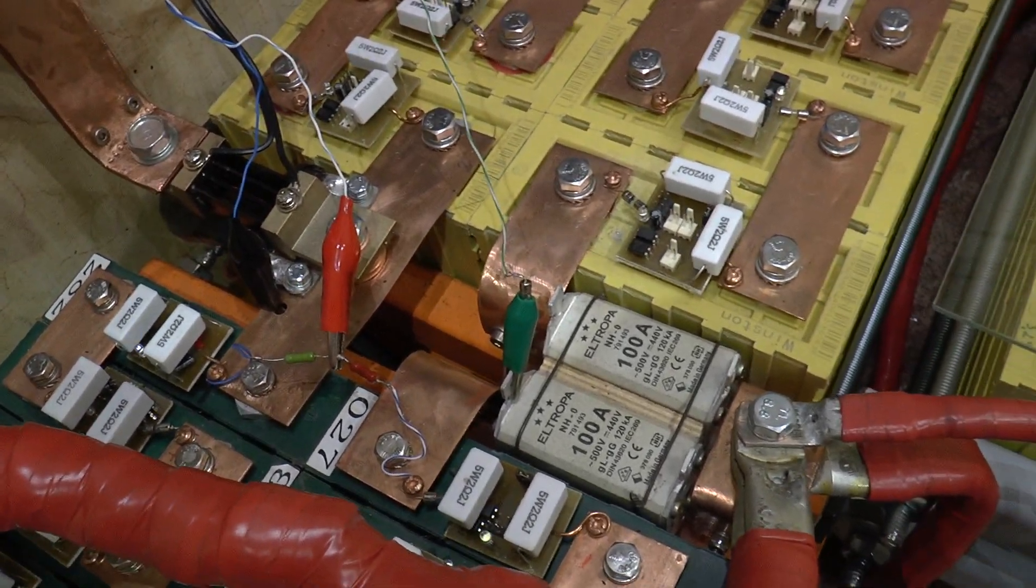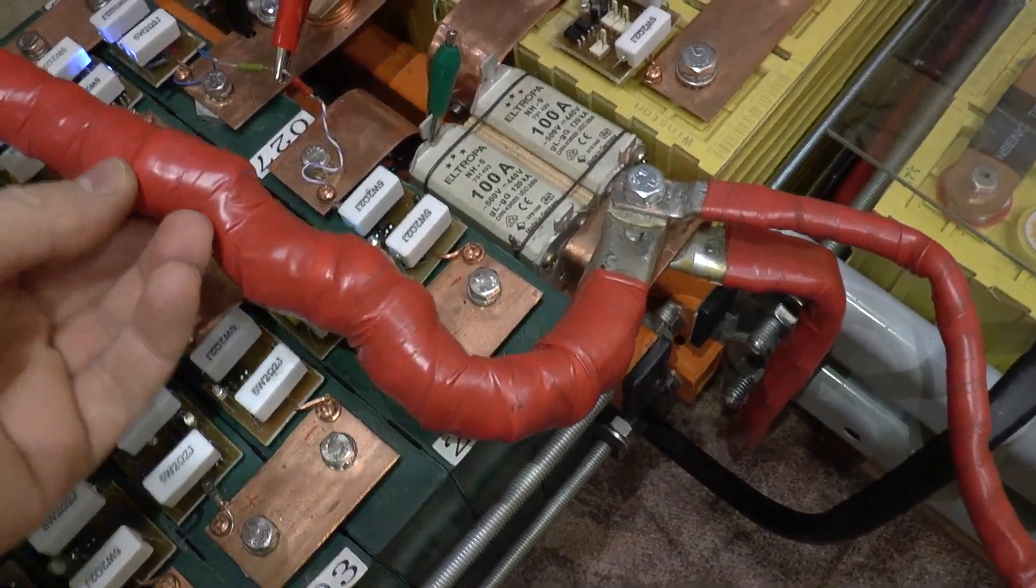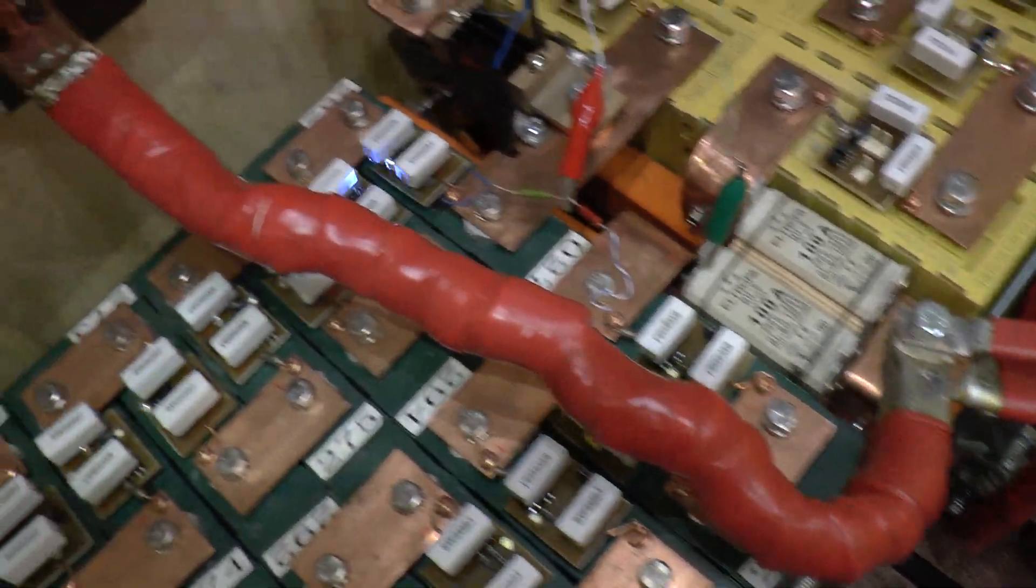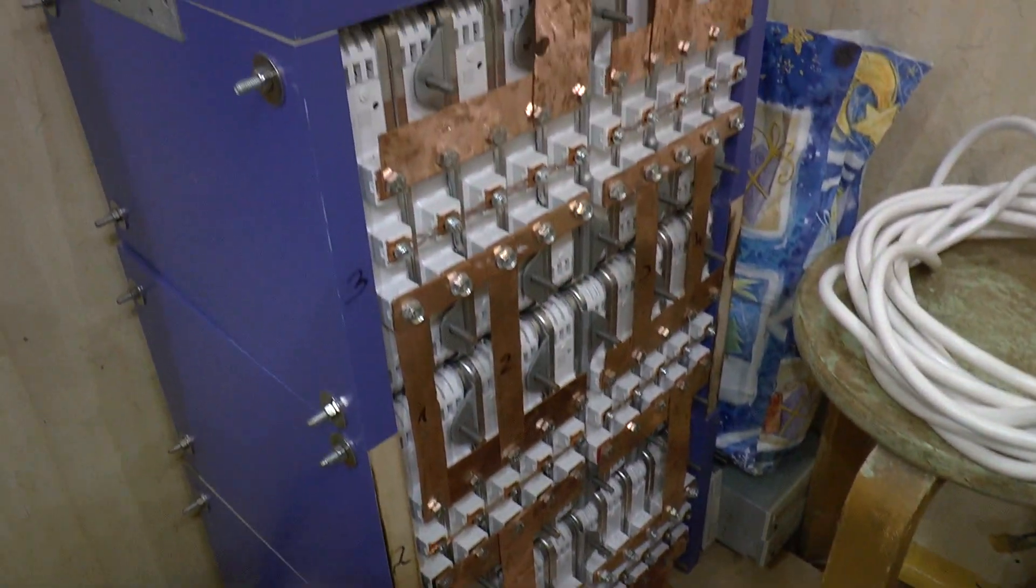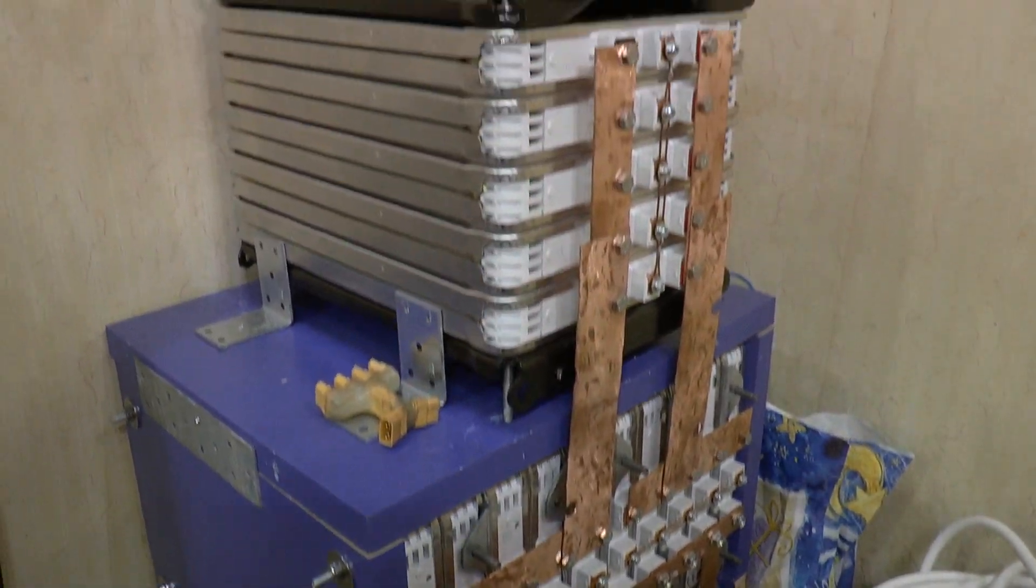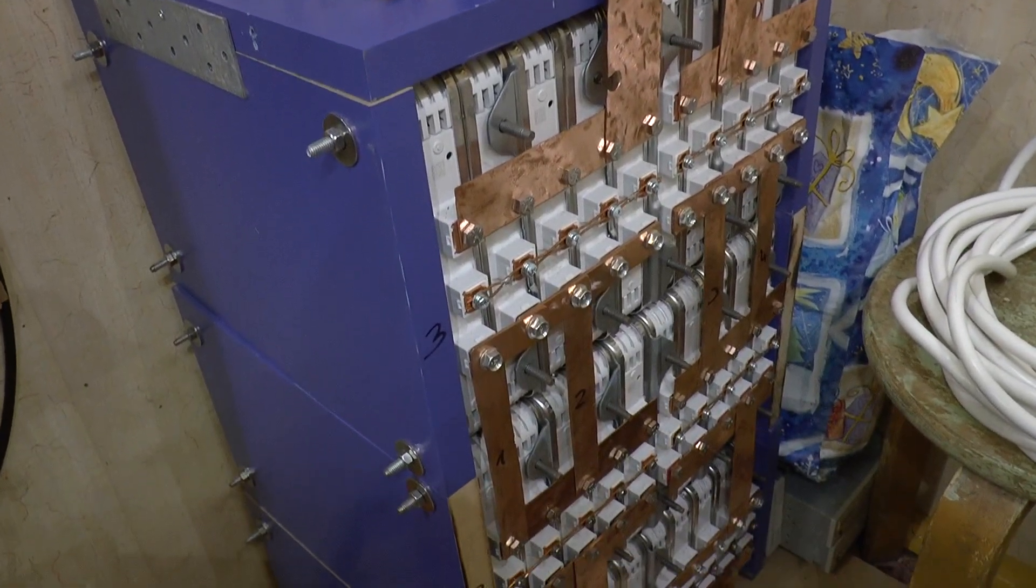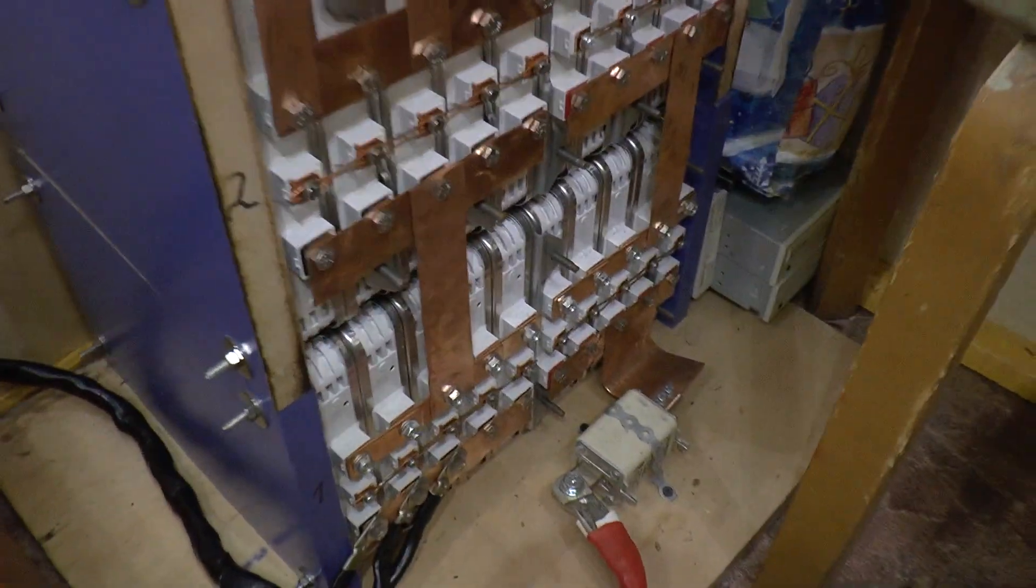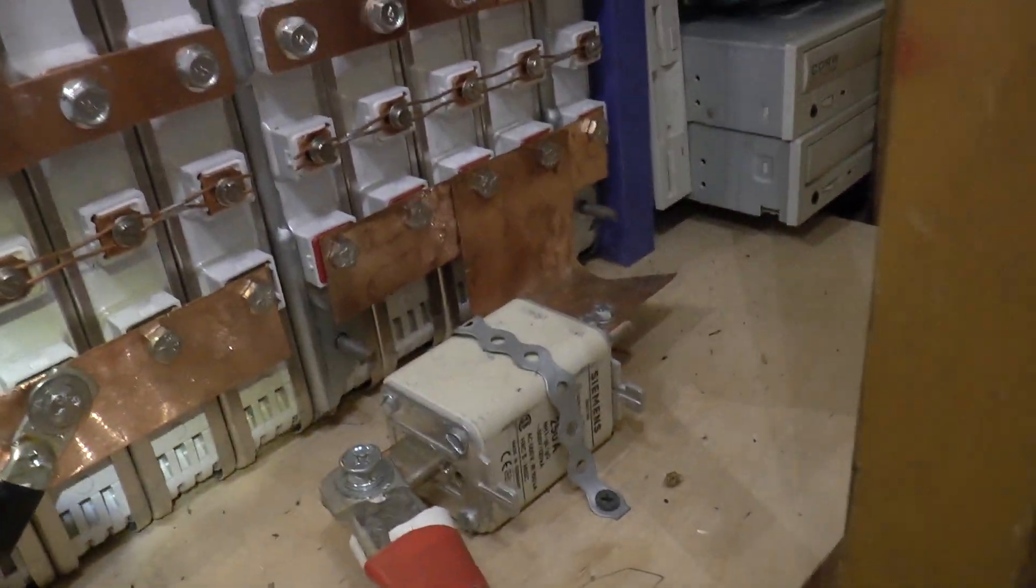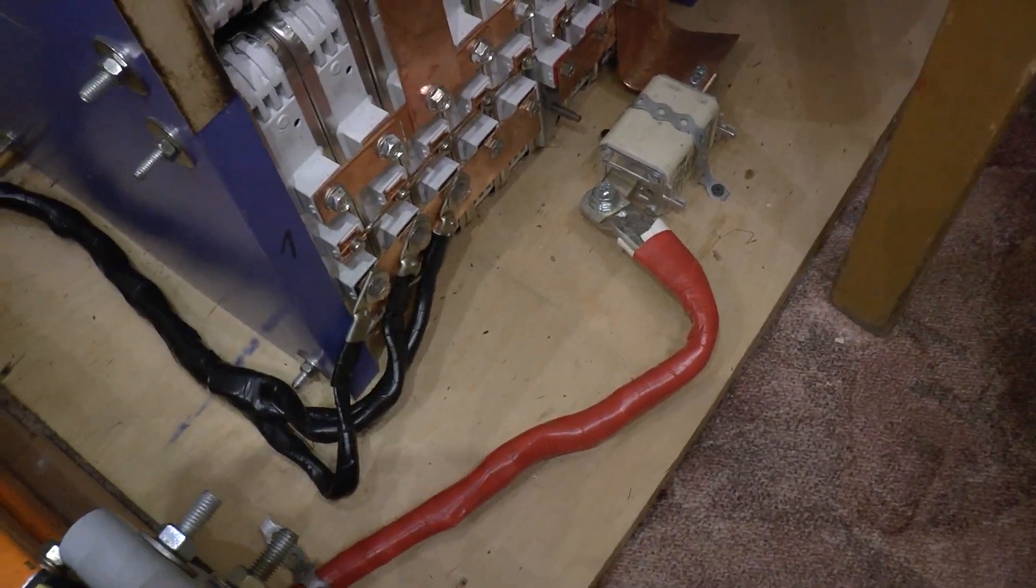These are my Nissan Leaf cells, 35 pieces, five in parallel and seven in series, so it's a 14S pack. I used 250 amp fuses and nice thick cables I made myself.